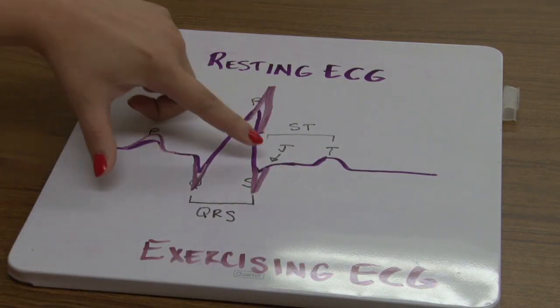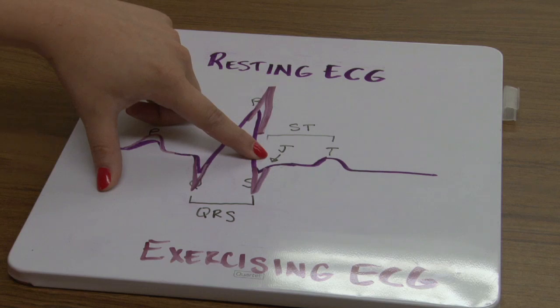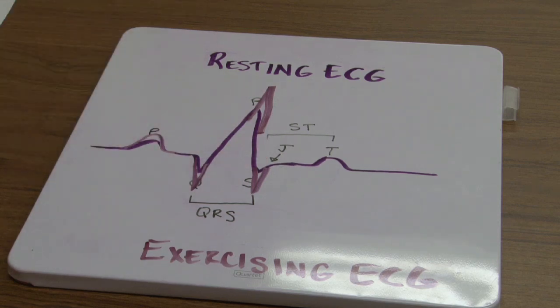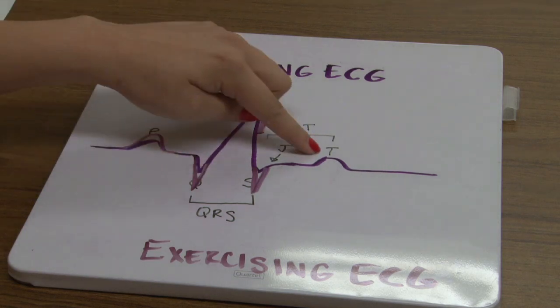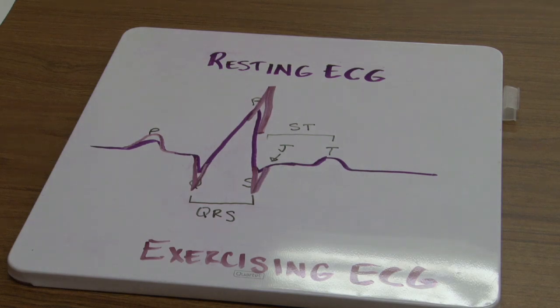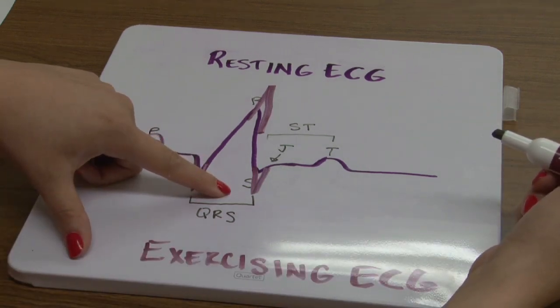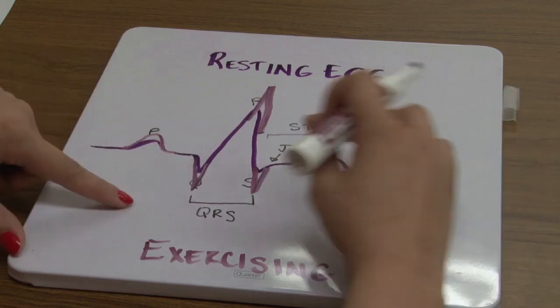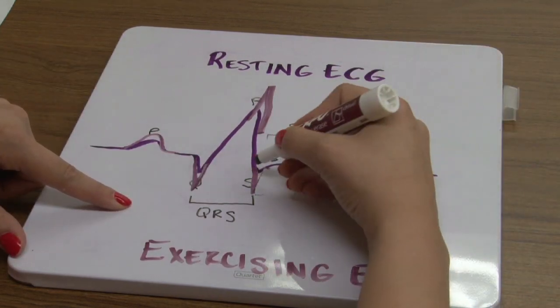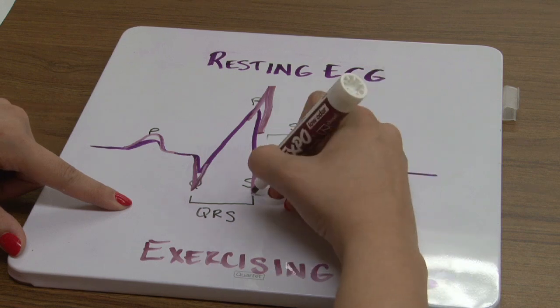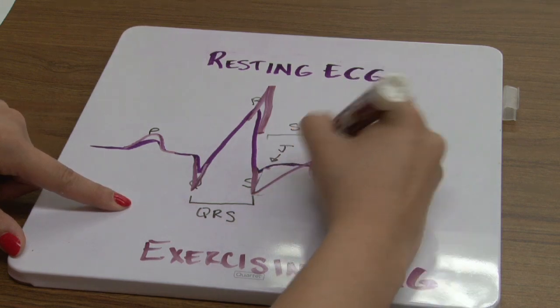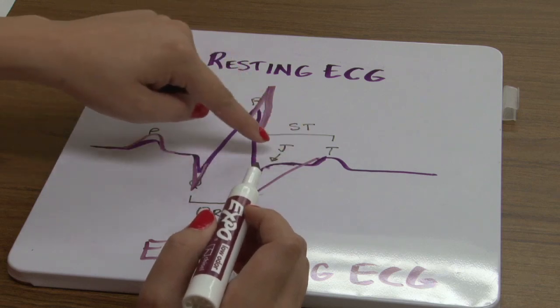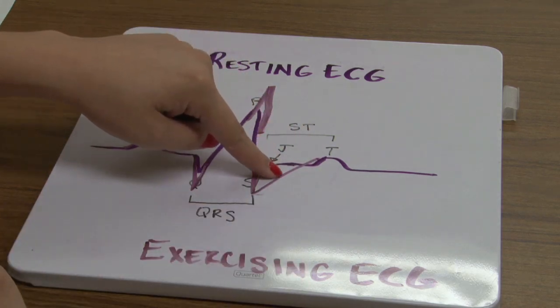Next when we look at the J point depression, the J point depression is the point between ventricular depolarization and repolarization, and this is usually going to depress. But this is going to blend in with the S and T segment. Because what we're going to see here at the end of ventricular depolarization and the beginning of ventricular repolarization is that it's going to slope upward. So while this increases in amplitude, it's also going to start to slant. You're not going to see this definitive line here anymore, and that's what we mean when we say that the J point is going to depress.